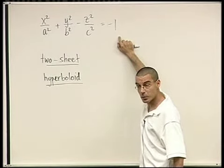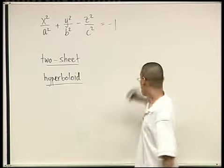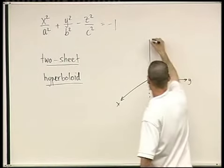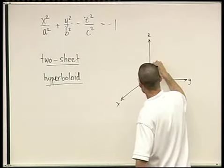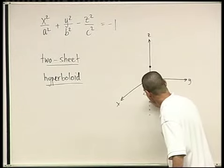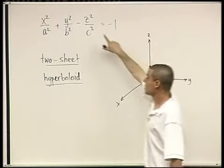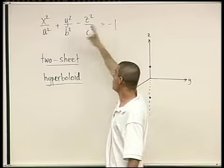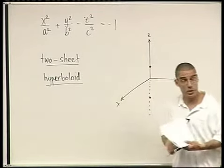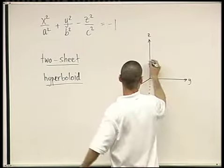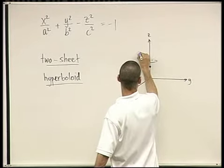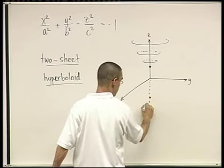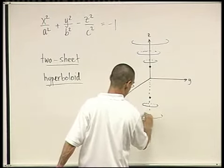At z = c you get just the single point (0, 0, c), and likewise the point (0, 0, −c). Once z is bigger than c, you get a positive value and start getting ellipses. So at z > c the ellipses appear, getting bigger and bigger, and likewise below z = −c the same thing happens.